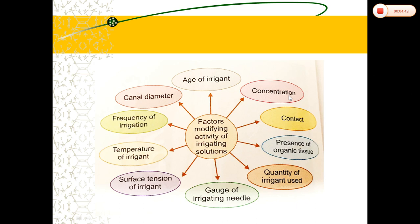We must use hypochlorite at a lower concentration. The next factor is contact. For the irrigant to be effective, it must be in contact with the substrate — meaning organic tissue, pulp tissue, or microorganisms. Once canals are sufficiently enlarged, irrigant can be deposited directly in the apical area using a fine irrigating needle or syringe, increasing its efficacy. Contact is a main point here.